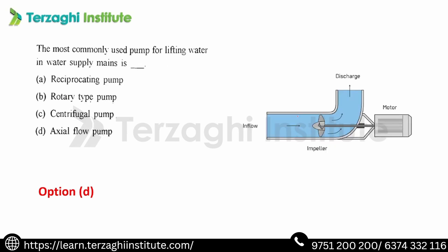The most commonly used pump for lifting water in water supply mains is the axial flow pump. Axial flow pump is used when we normally put water in flow and discharge the main — so we lift the water up. Axial flow pump is the best choice.